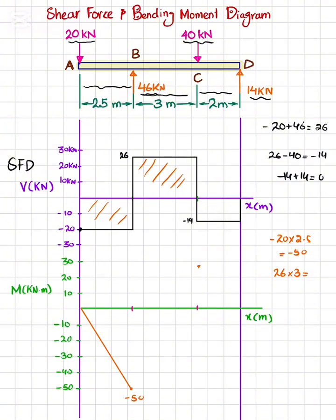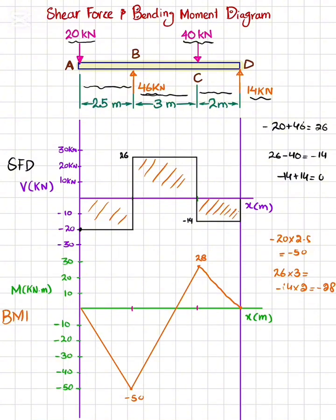Again, this shear force is a horizontal line with 0 degrees and this area is positive, so the bending moment will be one degree higher and slope will be increasing. If we join these two points we will get a straight line. Now the last area under the shear force diagram is equal to minus 14 multiplied by 2, which is minus 28. So plus 28 minus 28 will give you 0 at this point. This area is negative so the bending moment slope will be decreasing. That is the BMD, bending moment diagram.